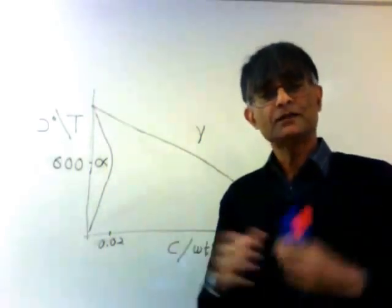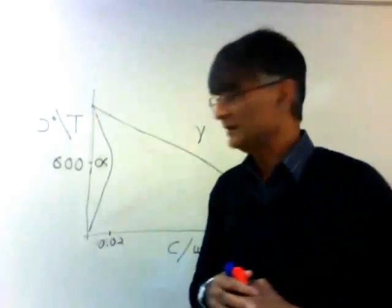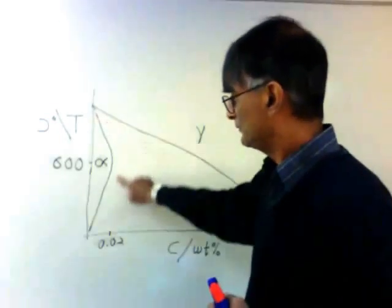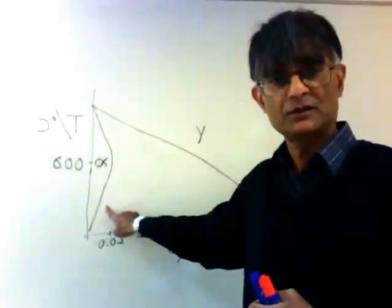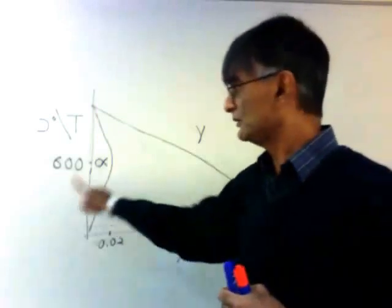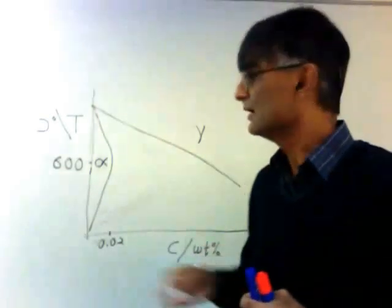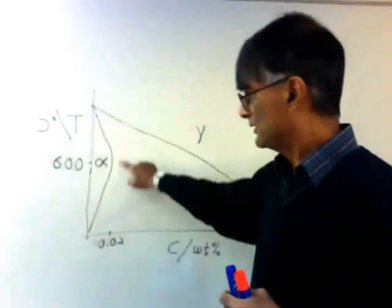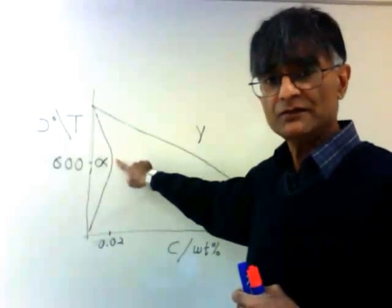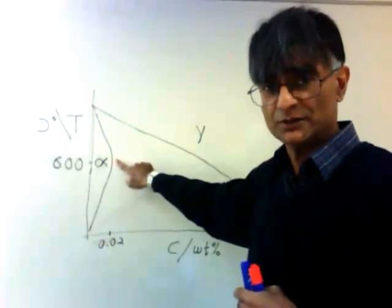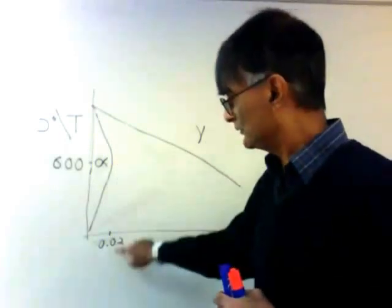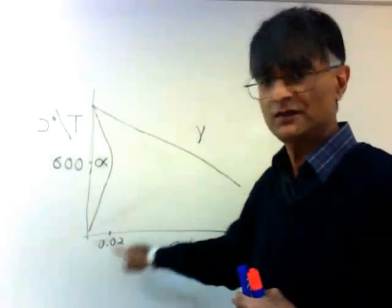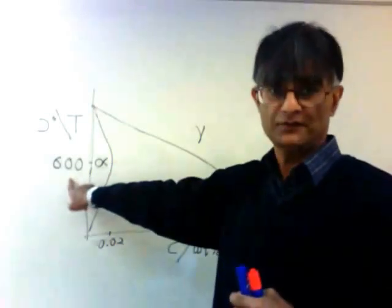The thing I would like you to notice on this diagram is that this boundary here, which represents the solubility of carbon in ferrite that is in contact with austenite, has a retrograde shape. This means that the maximum solubility of carbon in body-centered cubic ferrite is of the order of 0.02 weight percent at a temperature of 600 degrees centigrade.